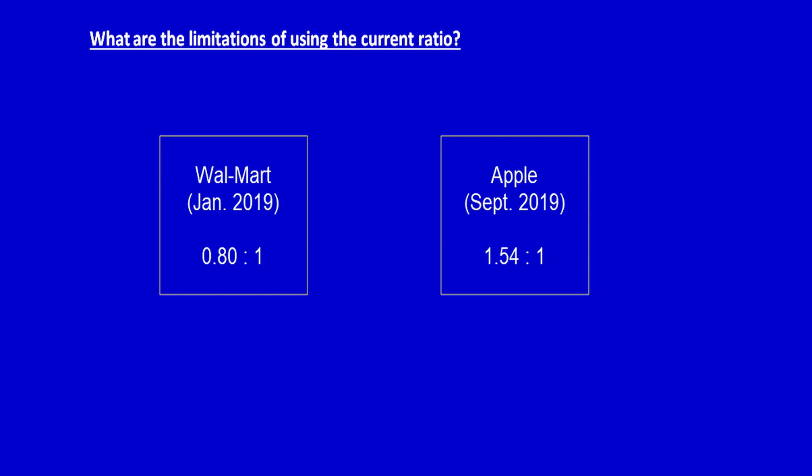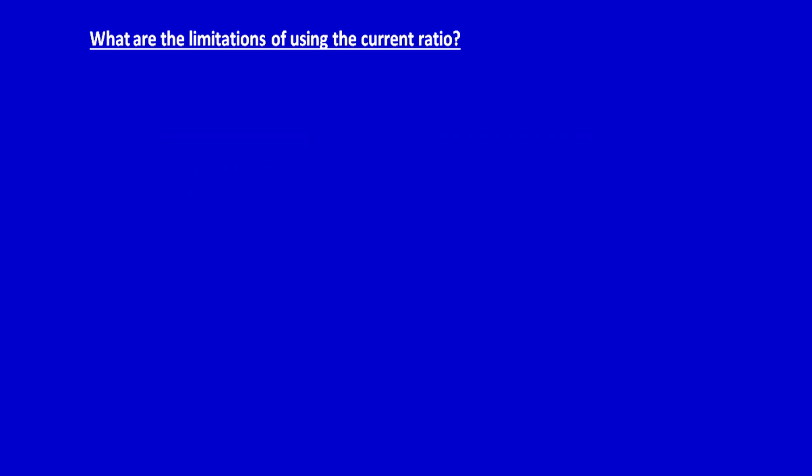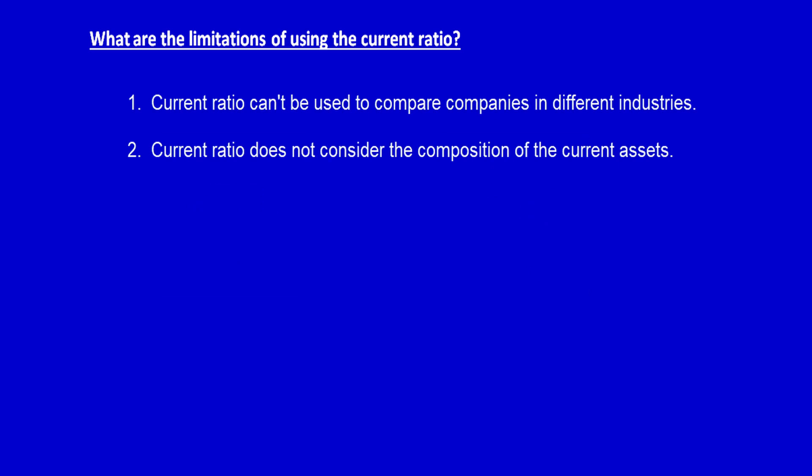Current ratios can't be compared between companies in different industries. The second drawback of using current ratios is that it does not take into account the composition of the current assets. I already mentioned this in a previous video.